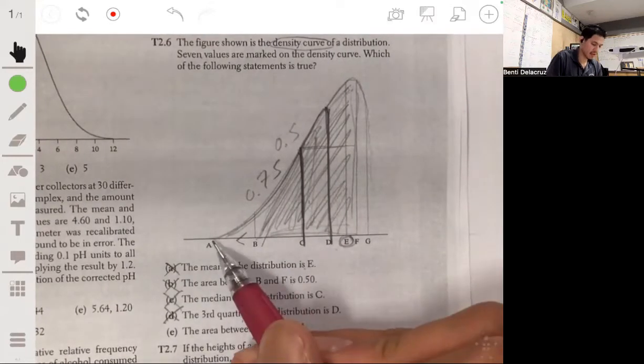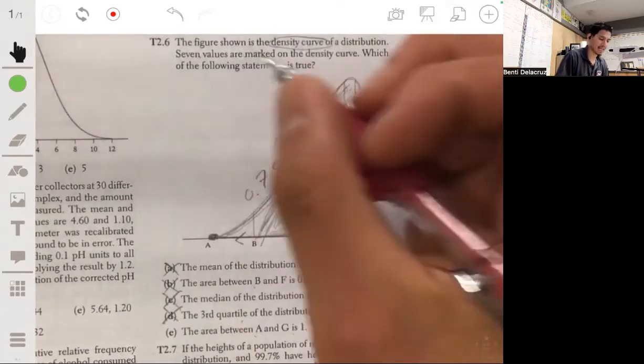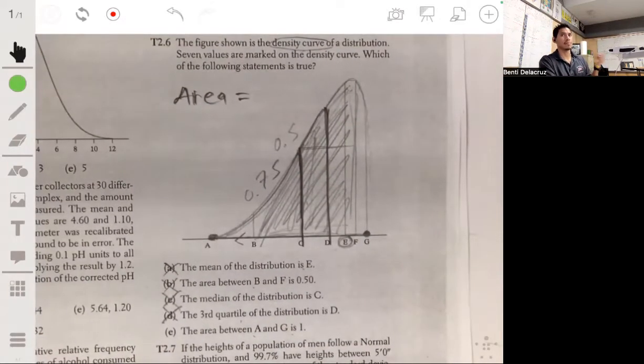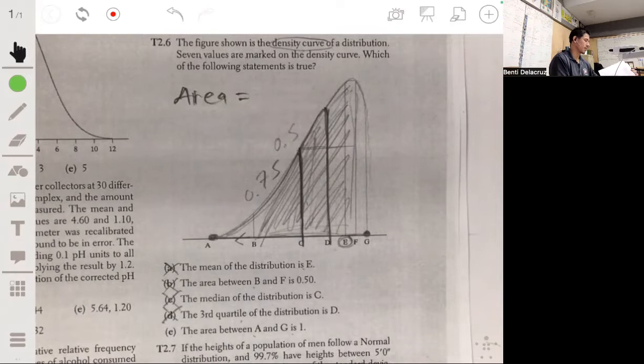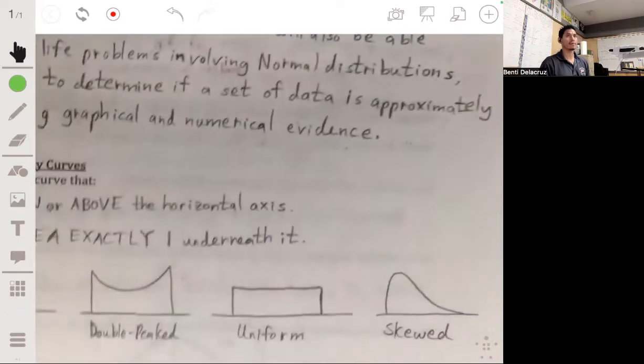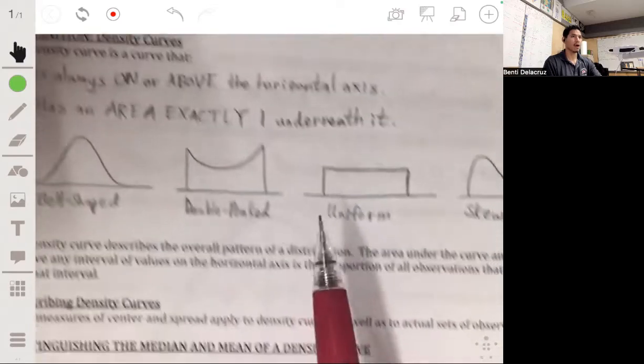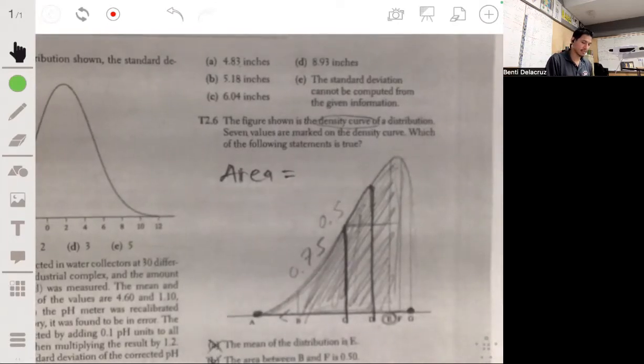The area between A and G is 1. Yeah, because by definition, a density curve has to have an area of 1. There's a couple of criteria that have to be met. It has to be above the horizontal axis, and it has an area of exactly 1 underneath it. Those are the two criteria. Since it's a total density curve, the answer would be E.